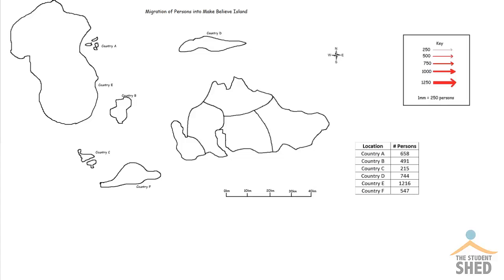Starting with country A, where there was a movement of six hundred and fifty-eight persons — I will use a two millimeter arrow for that. From country B there were four hundred and ninety-one persons, so I'll use the one millimeter line. From country C there was a migration of two hundred and fifteen persons, so we'll also use the one millimeter line for that.